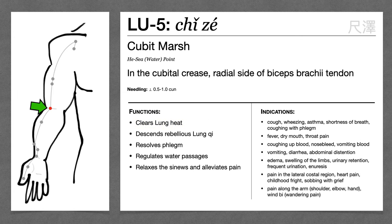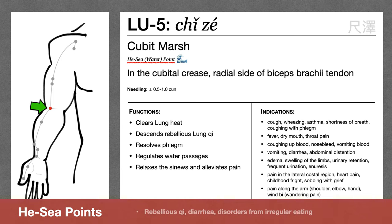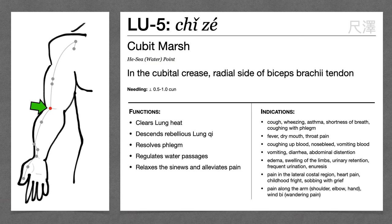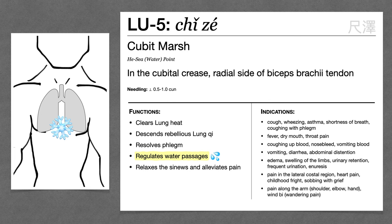Lung 5 is a He-Si point. He-Si points treat rebellious qi and diarrhea, and we see both of those here with cough, vomiting, and diarrhea. Lung 5 also regulates the water passages — you can think of Lung 5 as the He-Si water point. If a pathogen obstructs the lung's descending function, it can no longer descend fluids to the bladder and kidney, and we may end up with water retention. That's why we see things like edema, swelling of the limbs, and urinary retention.